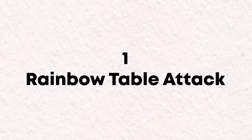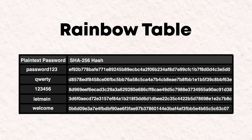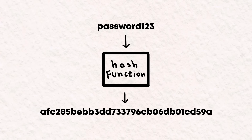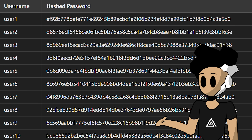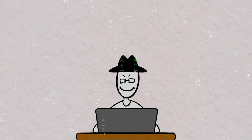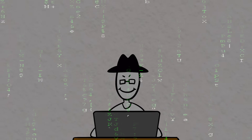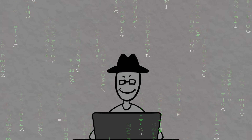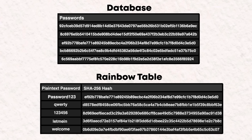Coming in at level 1, we have the Rainbow Table attack. Rainbow tables are collections of pre-computed hash values used to crack password hashes. Hashing is when a hash function transforms a plaintext password into a fixed-sized string of characters that appears random. That's how passwords are typically stored in databases, and an attacker can use a rainbow table to try to reverse that process to find the original password.